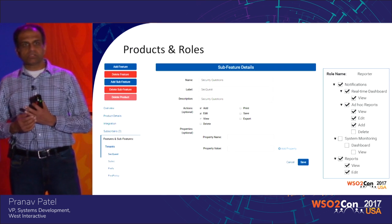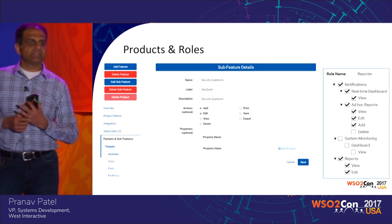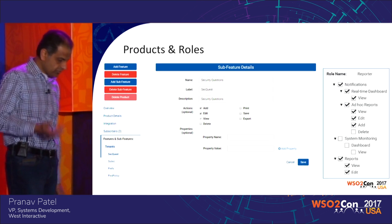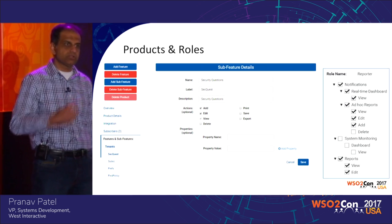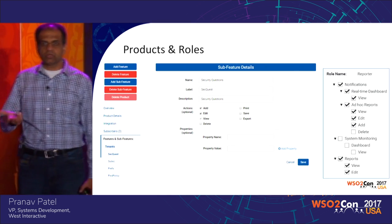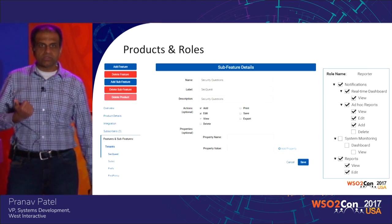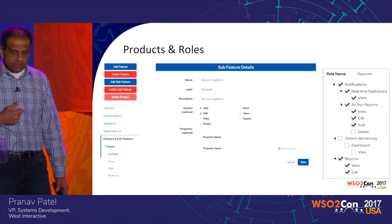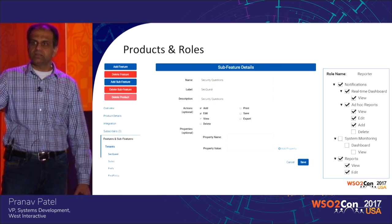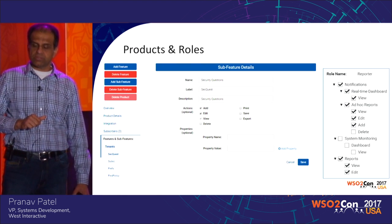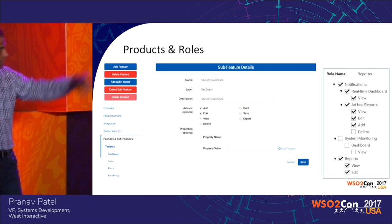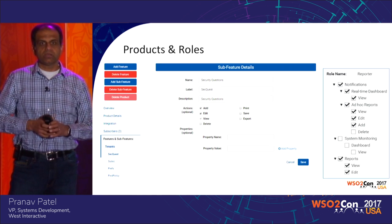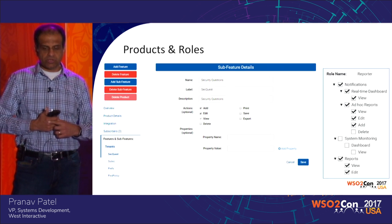Products and roles: products are really a definition of what the product is. They also contain information around how that product is going to be integrated into the portal — some sort of metadata information along with the features and sub-features the product has. Once you have that, you can define the permissions or roles for the product, defining a role based on the features, sub-features, and actions you have defined.